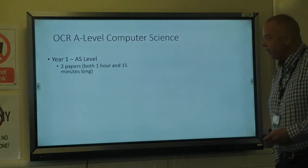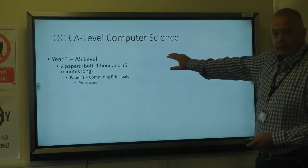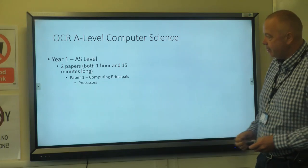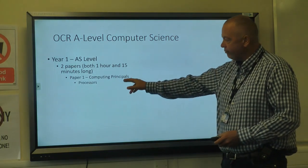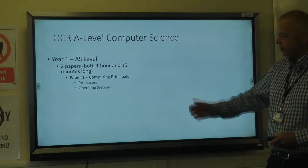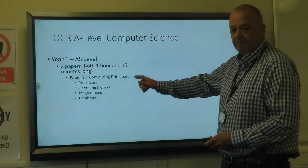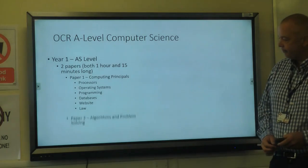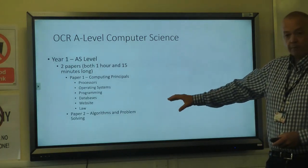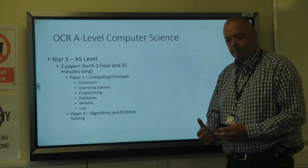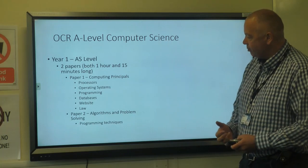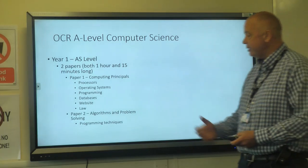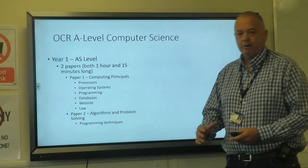So here's what we'll be covering. It's a two-year course — you end up with an A-level in Computer Science. In Year 1, you get two papers: Paper 1 covers computing principles, processes, operating systems, programming, databases, website design, and laws. Paper 2 has more programming, algorithms like bubble sort, programming techniques, and writing code and pseudocode to solve problems.